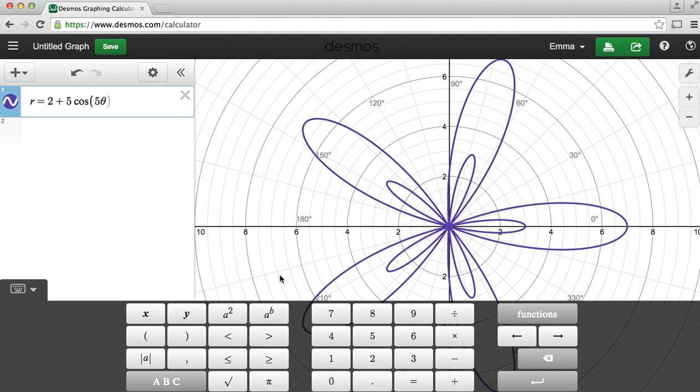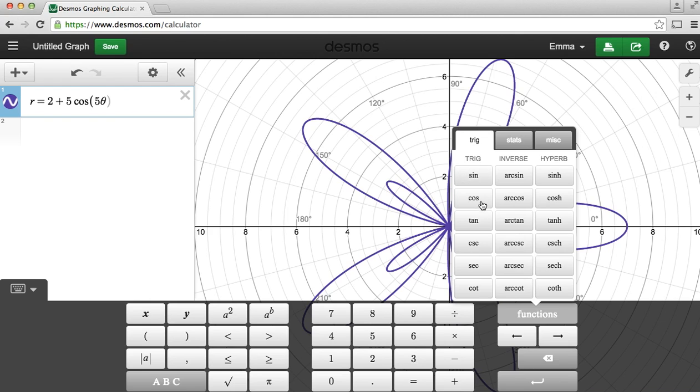Again, to get cosine I just typed it out, but it's also available under functions and then trig, and there's cosine right there.